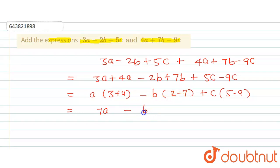- that is minus 5. And here plus c: 5 minus 9, so this is going to be equal to